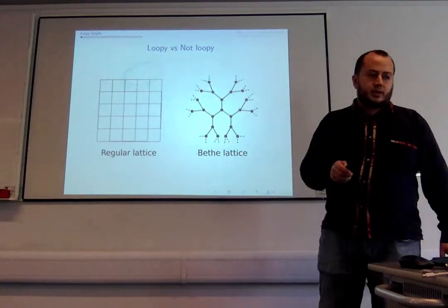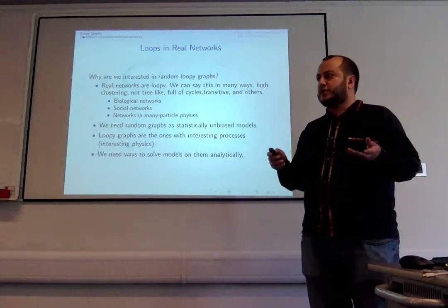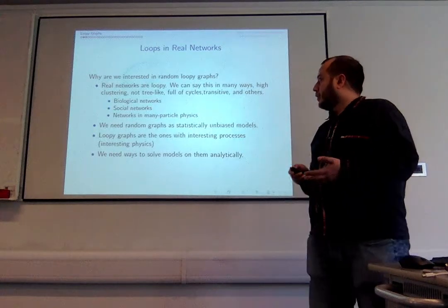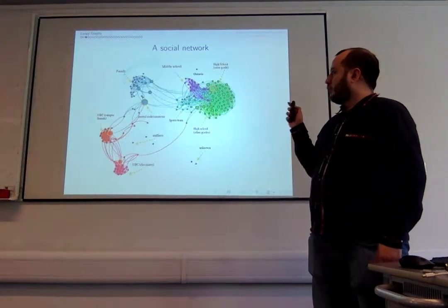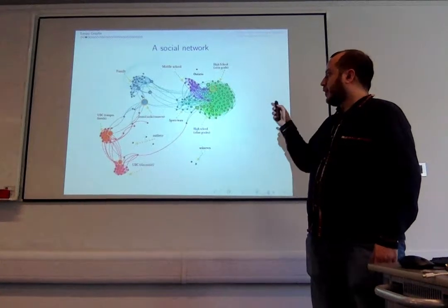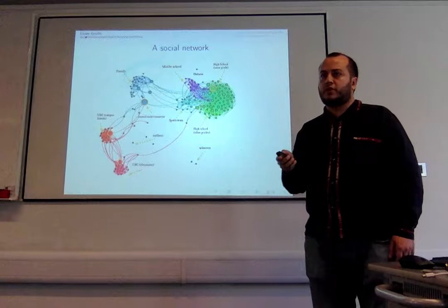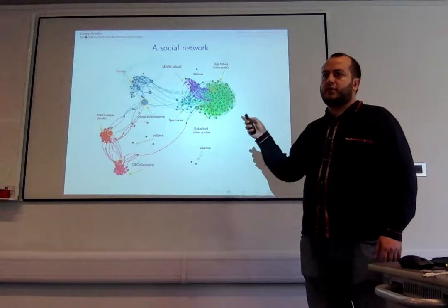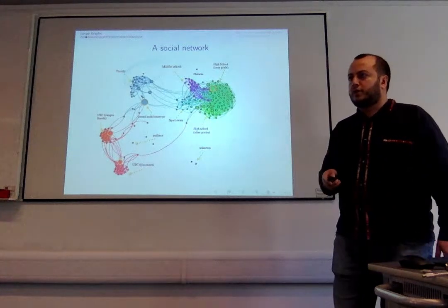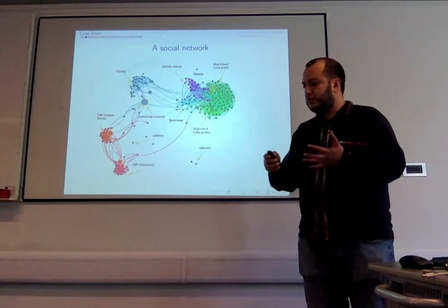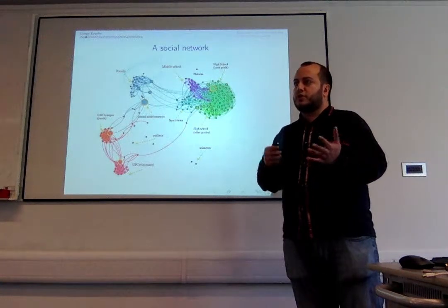If you look at the literature, most of the things that are solved are for networks that are treated as tree-like. The other important point is that when you have applications — for example, social networks — you would like to test whether the features you observe are normal or anomalous. To do that test you need a null model, which means a random network that preserves some features but not all of them.